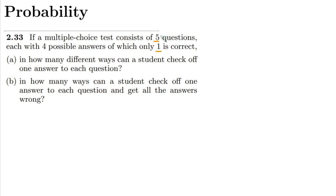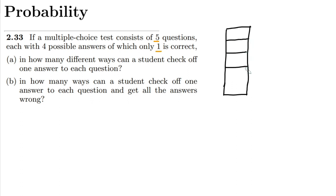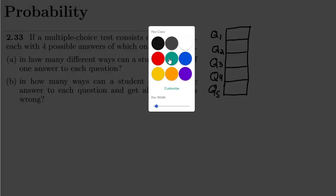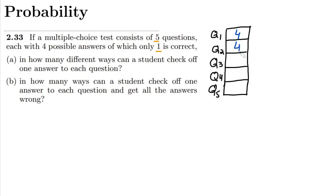Before solving the two parts of this question, let me show you the scenario. I have five questions, so let me draw them as column boxes — question one, two, three, four, and five. Each of these questions has four options to pick a correct answer from, and out of these four only one is correct.